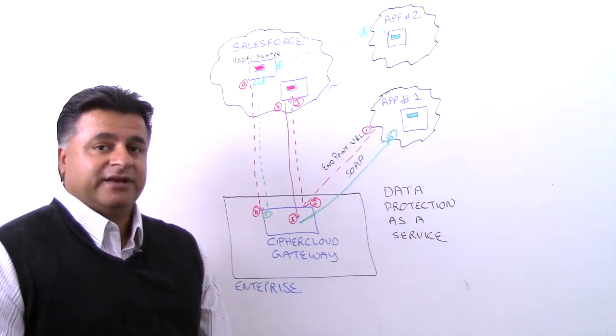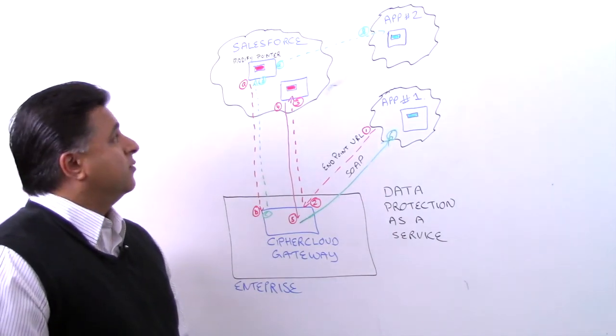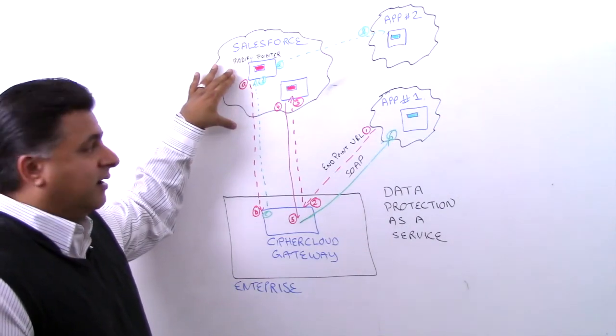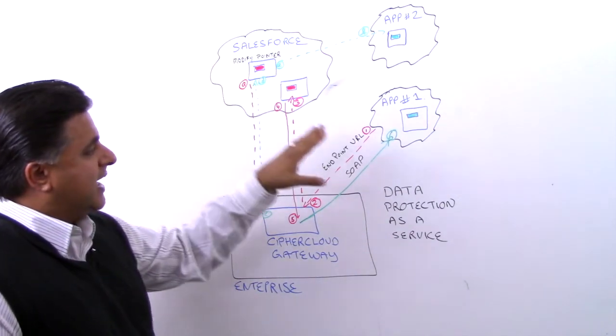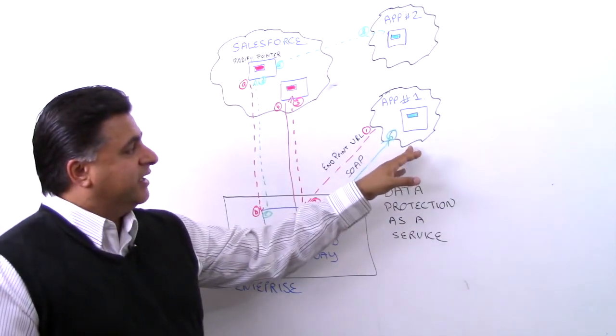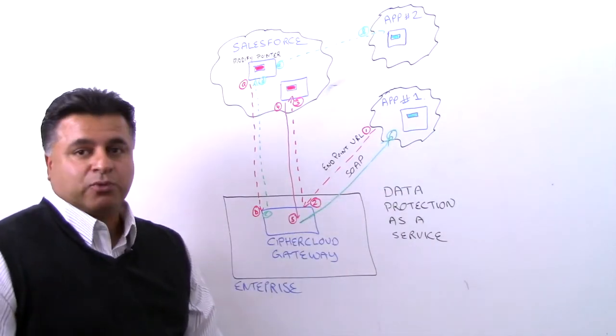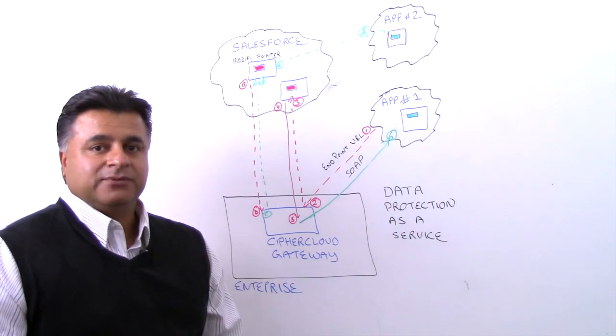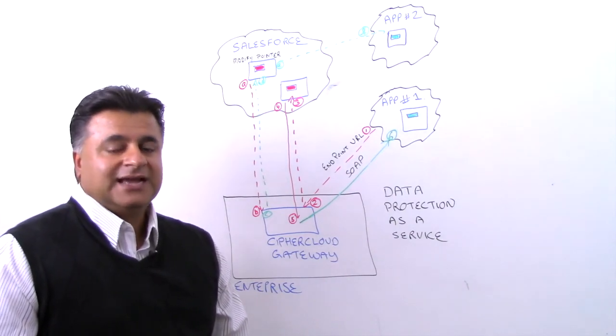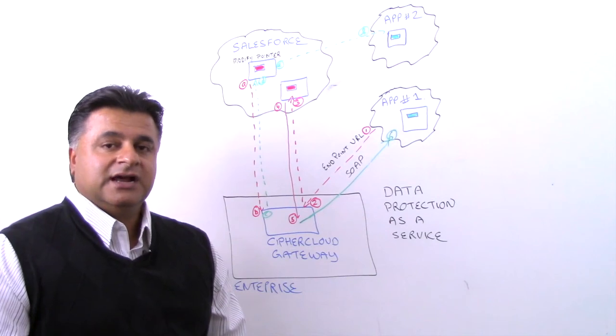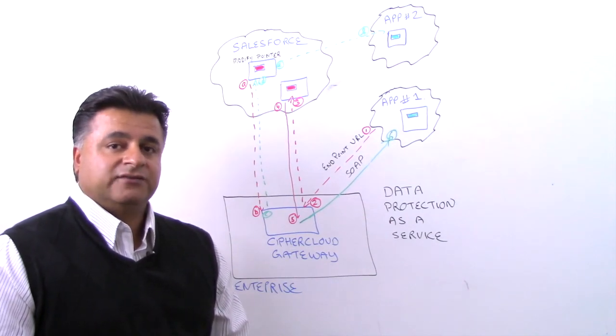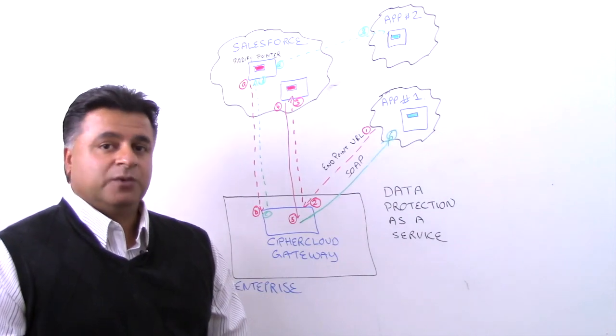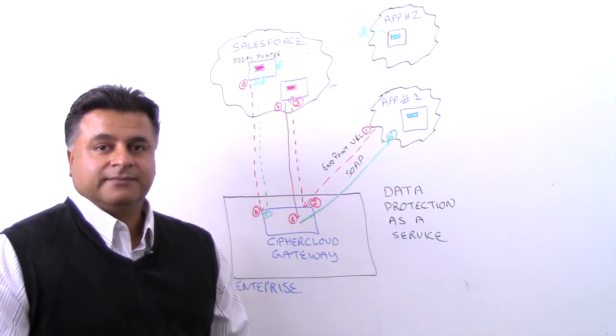This is an example of server-side or modification of the pointer or URL in comparison where on application one, we're changing the endpoint URL within that application. So those are two examples of data protection as a service, and that allows the Salesforce AppExchange partners not only to protect the data within Salesforce, but then to access it and process it in clear text when the use case requires it. Thank you.